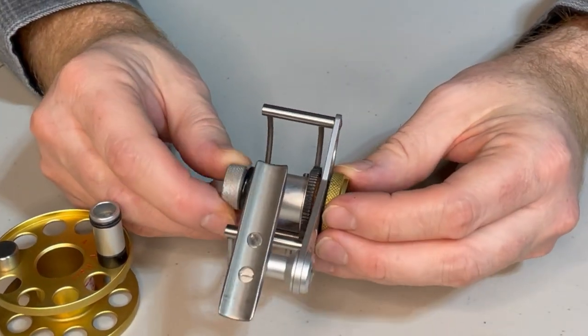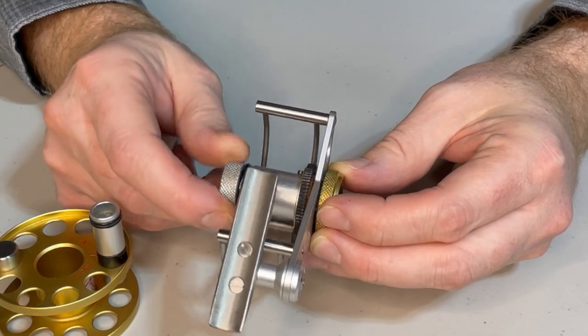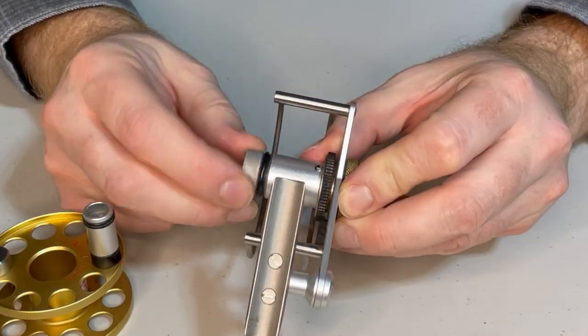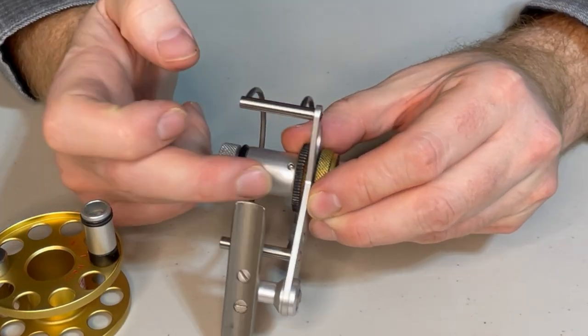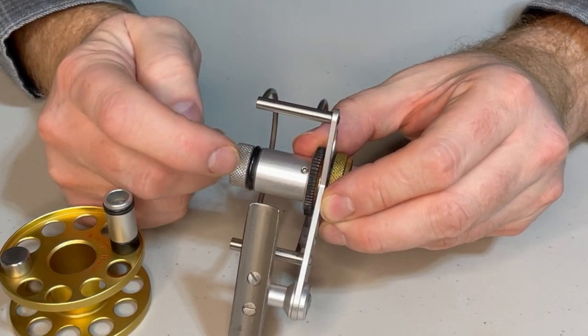Very unique drag system. I would love to take it apart. However I know nothing about it, and so we'll leave that to another day. But the drag system is completely contained within this pillar it looks like. The spool cinches down on an o-ring here.